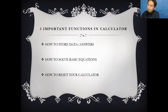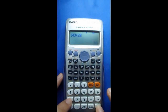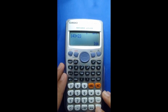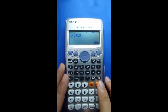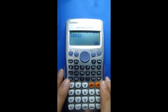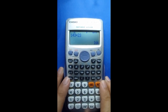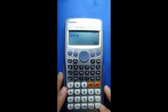How to store data and answers: for example, if you are given an equation like 143 plus 23 equals 166 and you want to store 166 in the calculator, you have to click equals. Then after you click equals, press Shift, then press RCL which is Store, and then select a letter — A, B, C, D, E, F, or G. Let's say you select A, then press the equal button.